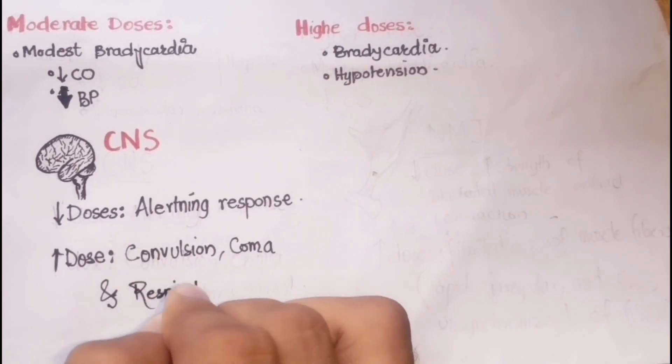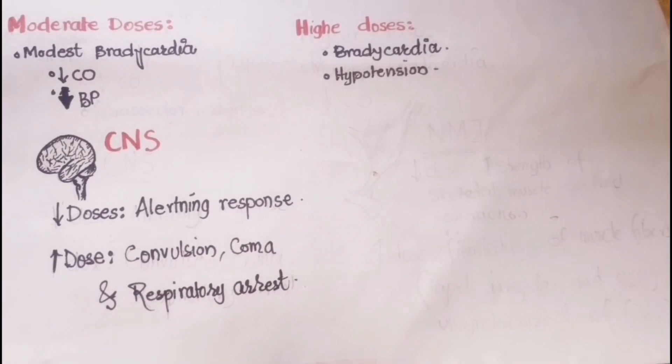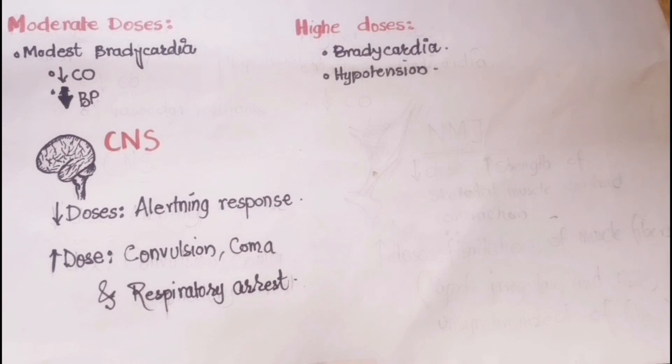While higher doses of these drugs may cause generalized convulsion, coma, and respiratory arrest. In addition, the effects on the peripheral nervous system are unlike that of direct-acting drugs, which we have talked about in the previous video.